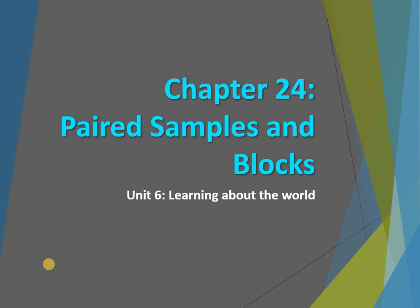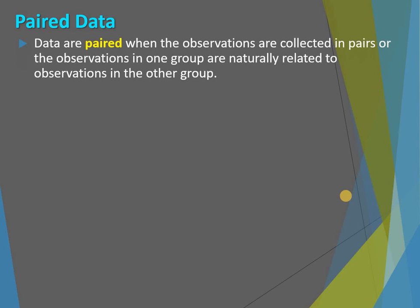Chapter 23 was about comparing means, which meant that we started with this idea of two separate independent groups. We knew we had independent groups, so we looked at them separately — we took their averages separately and then we compared those averages. Now Chapter 24 is about paired samples and blocks. We do paired samples and blocks when we think that there is something linking the groups together, that there might be things going on within it.